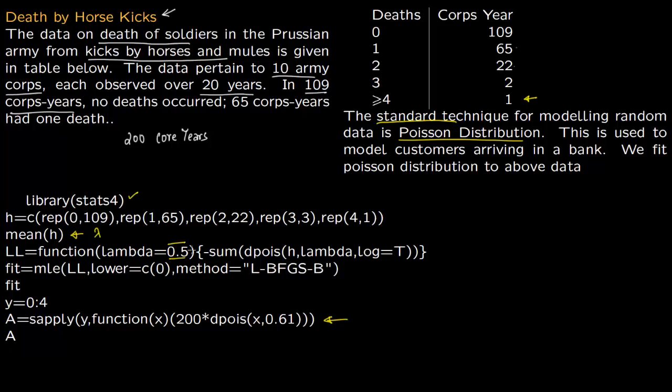You have a function where lambda is set as 0.5 as a default value in case things fail. Then you have minus sum of dpois. H is the vector coming in, lambda is the parameter you want to measure, and log is true. You're going to fit maximum likelihood estimation.